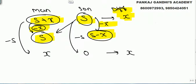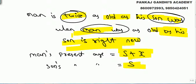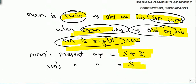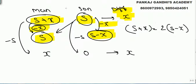Let me repeat the question: man's present age is twice as old as his son was when the man was as old as his son is right now. Man's present age is s plus x, son's present age is s, difference is x. When man's age was equal to son's present age — that is s — that was x years back. At that time, son's age was s minus x.